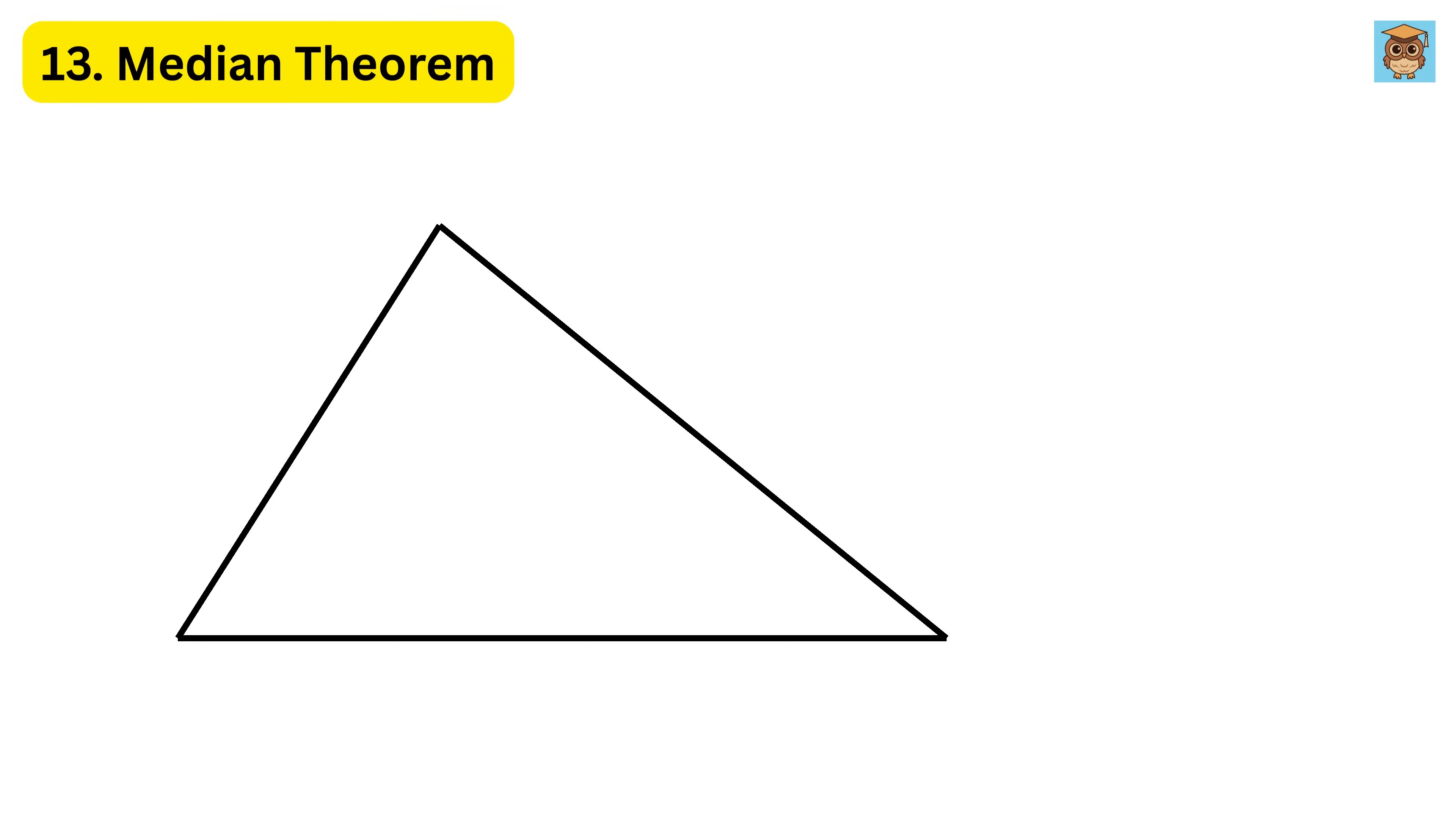13. Median Theorem. A median is a line drawn from any corner of a triangle to the middle of the opposite side. So if this is the center point of this side of the triangle, which divides it into half, then this line is called the median line. Here's the cool part. Each median splits the triangle's total area into two equal parts, which means,